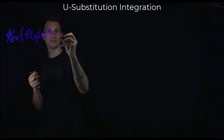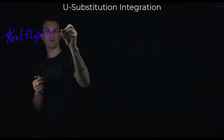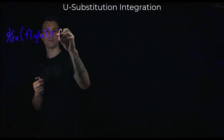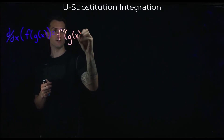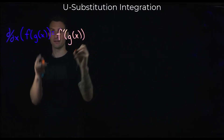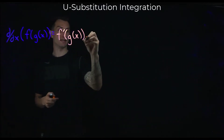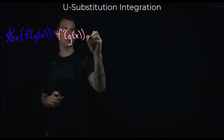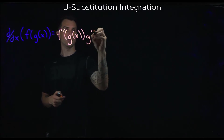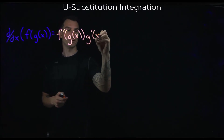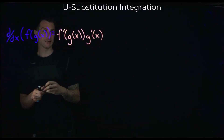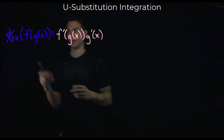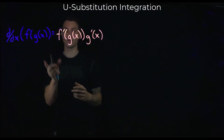If we take the derivative, I get the derivative of the outside function, leave the inside alone, and the derivative of the inside function — I get g prime of x. Just the chain rule.